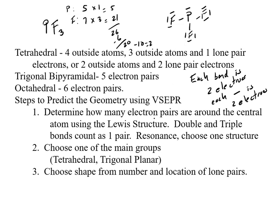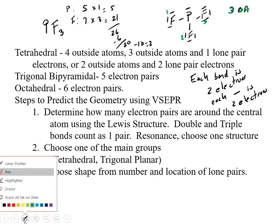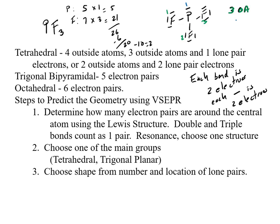So determine how many electron pairs are around the central atom. As I said before, I would say that this has three outside atoms. I get that by going one, two, three. So I'll go a little bit in green. Three outside atoms. And then this also has one lone pair.